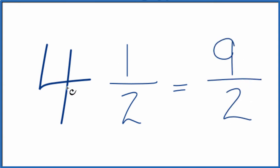So when we take the mixed fraction, 4 and 1 half, to an improper fraction we have 9 over 2. And these are equivalent. They're the same value just written differently.